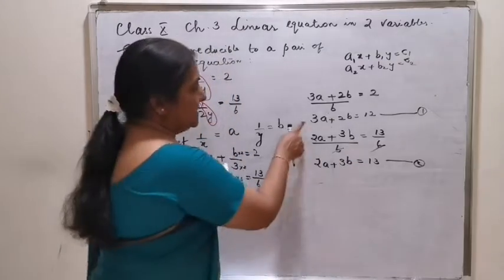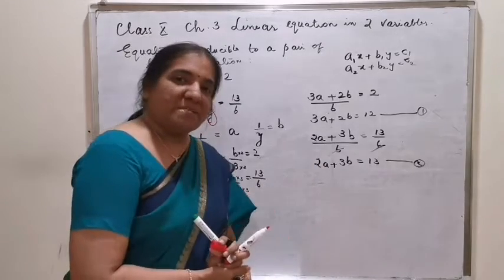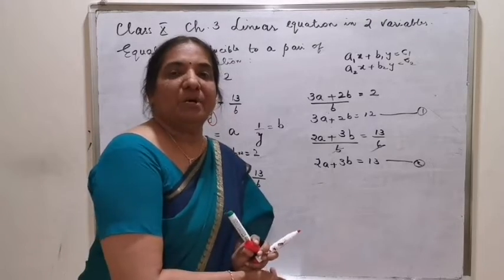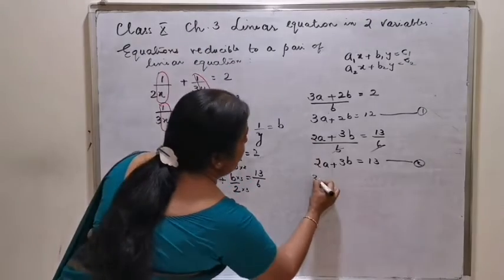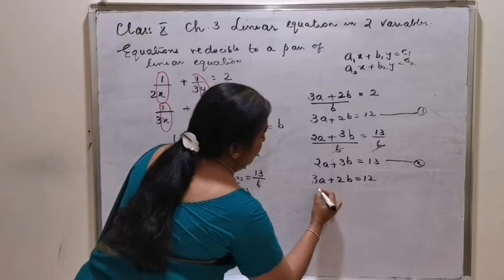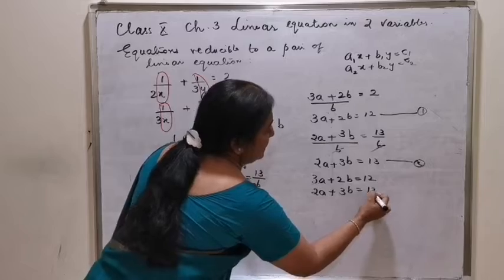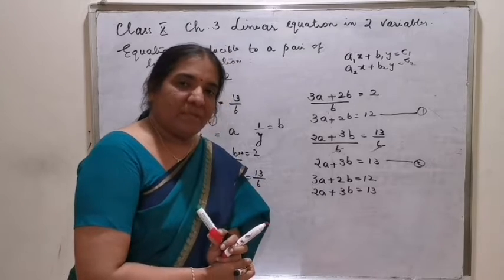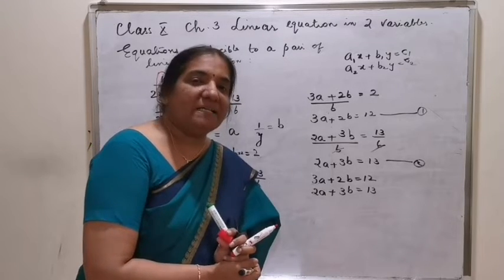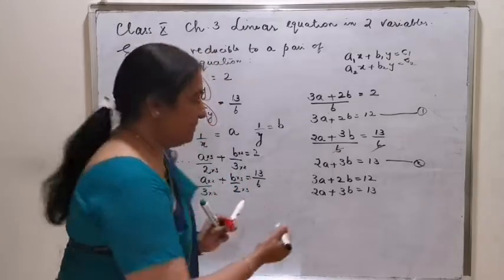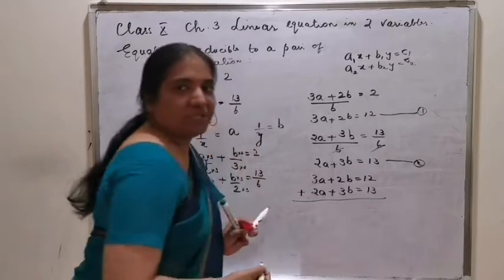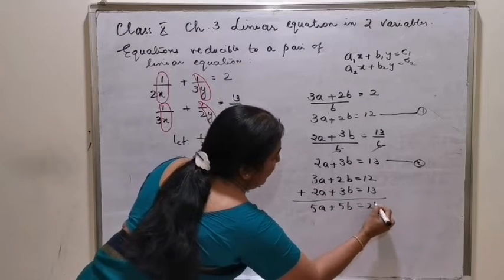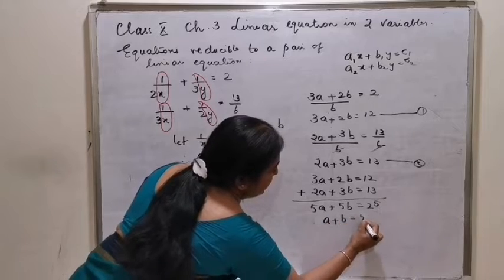One method is the elimination method, where the a term has to be made into 6 and you can proceed. Let me teach you a new method. When you have the coefficients interchanged, there is an easy method when bigger numbers are involved. First, you add the equations: 5a plus 5b is equal to 25, or a plus b equals 5.